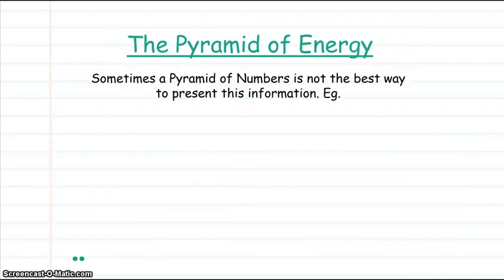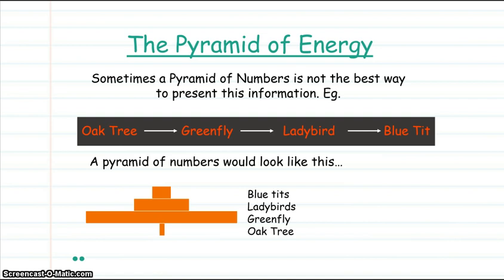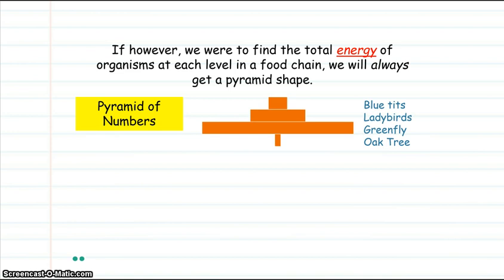Sometimes, a pyramid of numbers is not the best way to present this kind of information. For example, for this food chain, a pyramid of numbers would look like this. Since there is only one oak tree, the pyramid would have a very small base. If, however, we were to find the total energy of organisms at each level in the food chain, we will always get a pyramid shape.